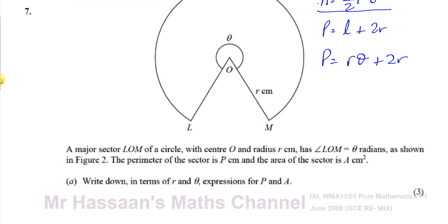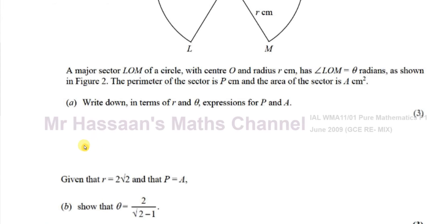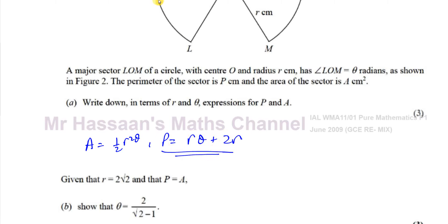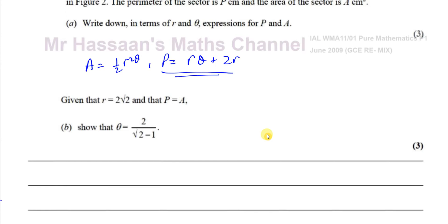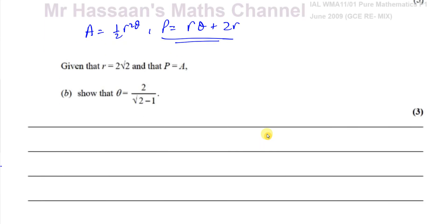So we know that A equals ½r²θ and p equals rθ plus 2r. Those are the formulae for the area and for the perimeter of the sector.